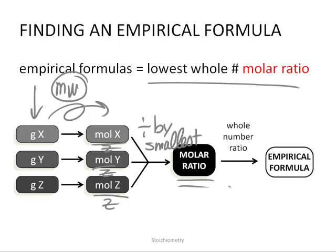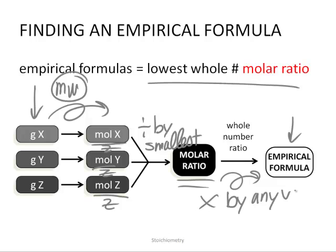Oftentimes the division won't give you a whole number ratio, and since the empirical formula requires the lowest whole number ratio, you need to turn the molar ratio into whole numbers by multiplying by any integer value needed to achieve that.